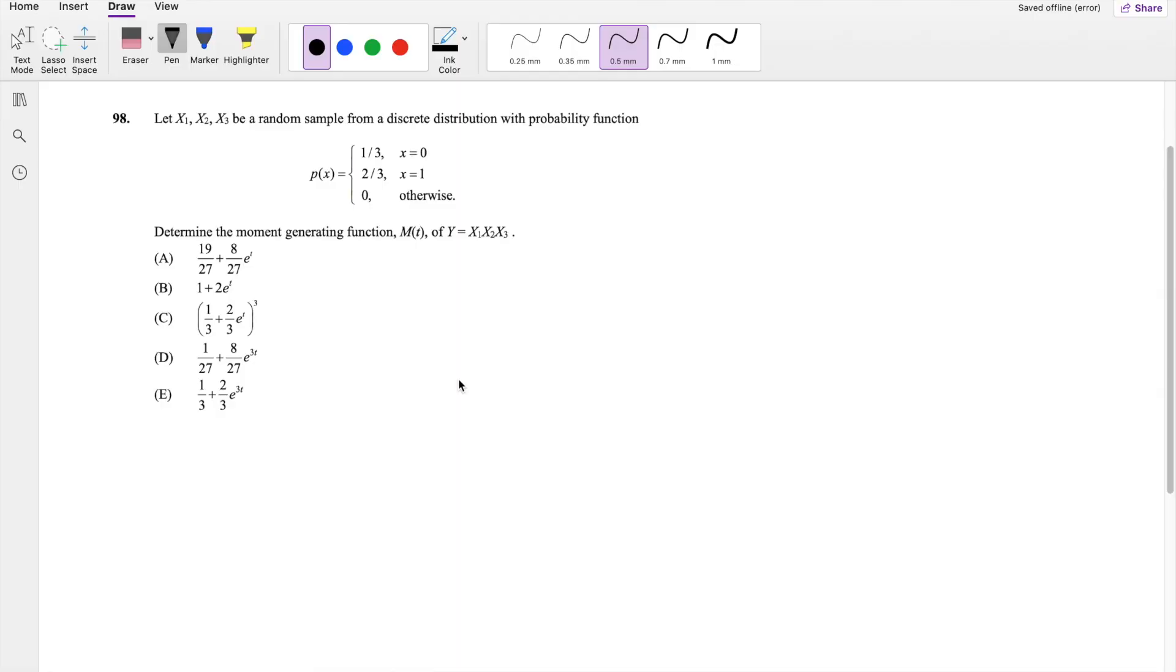In this problem, I'll be going over question 98 on SOA Exam P. So pause the video real quick and try this problem yourself. Okay, assume you've attempted it, let's just dive right in. So in this question, we're given that y equals x1, x2, and x3 multiplied together, and we know that x can only be 0 or 1, or there is no probability that it could be anything else but 0 and 1.